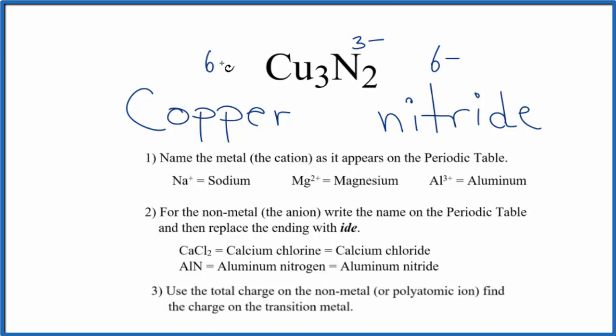Copper, we have to have a six plus for these two to balance out, give us a net charge of zero. So we have to have three times some number, give us six plus. Three times two plus, that's six plus. These cancel out, net charge is zero.